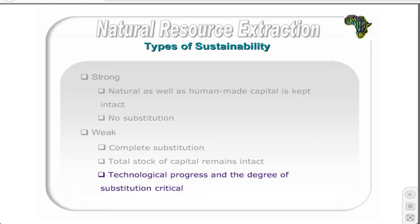For example, the ability to recycle paper or recoup more pulp from timber — that is, technological progress — becomes critical to using less timber and thus more machinery to produce the same quantity and quality of paper. The important condition for weak sustainability is that investment in human-made capital, I, is equal to or greater than the depreciation in human-made capital, Dm, and the depreciation in natural capital, Dn.